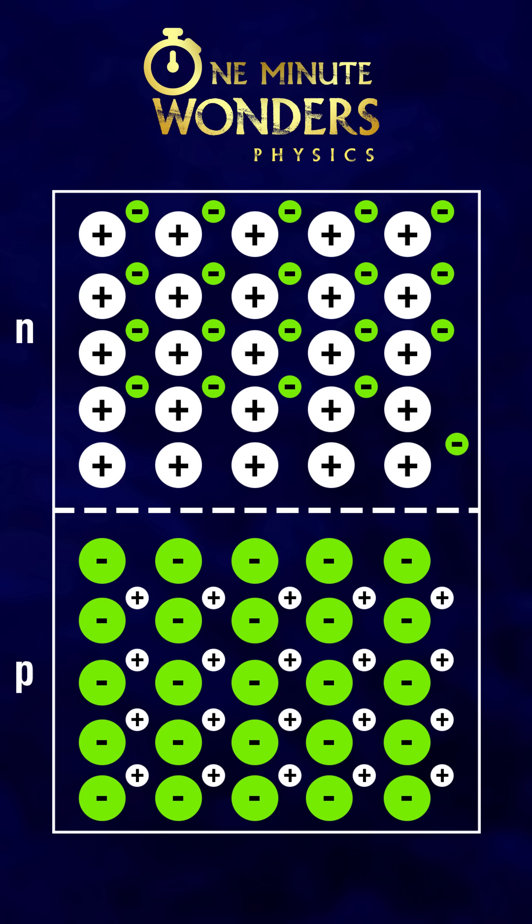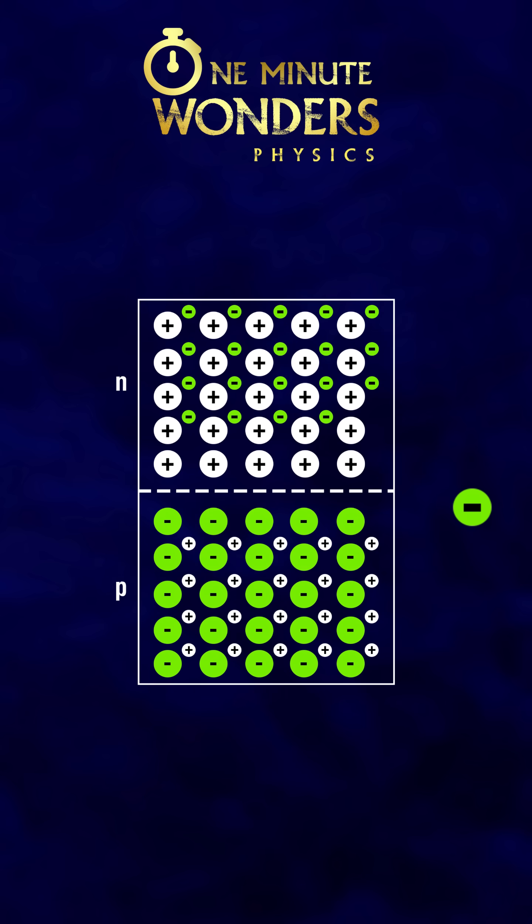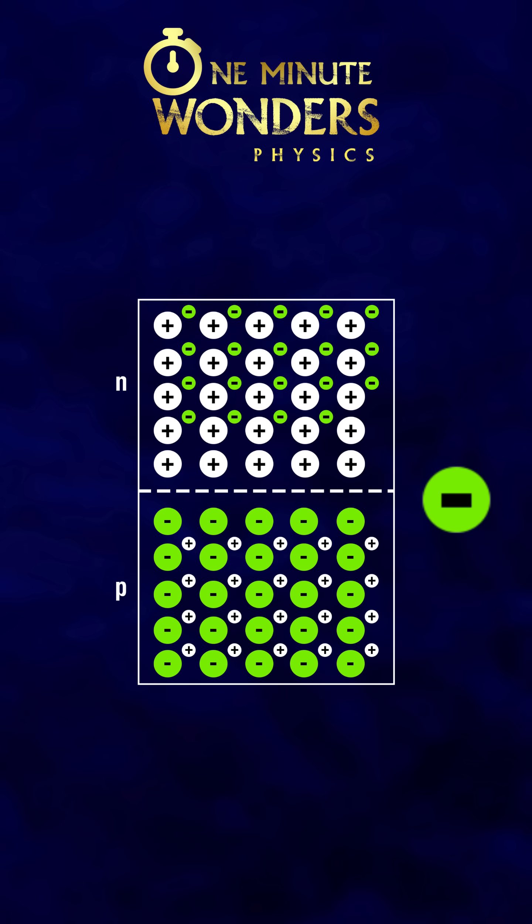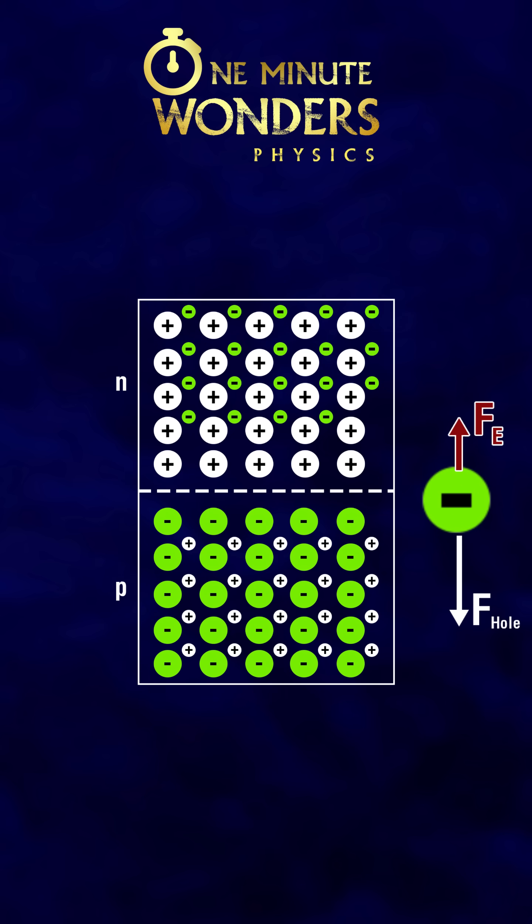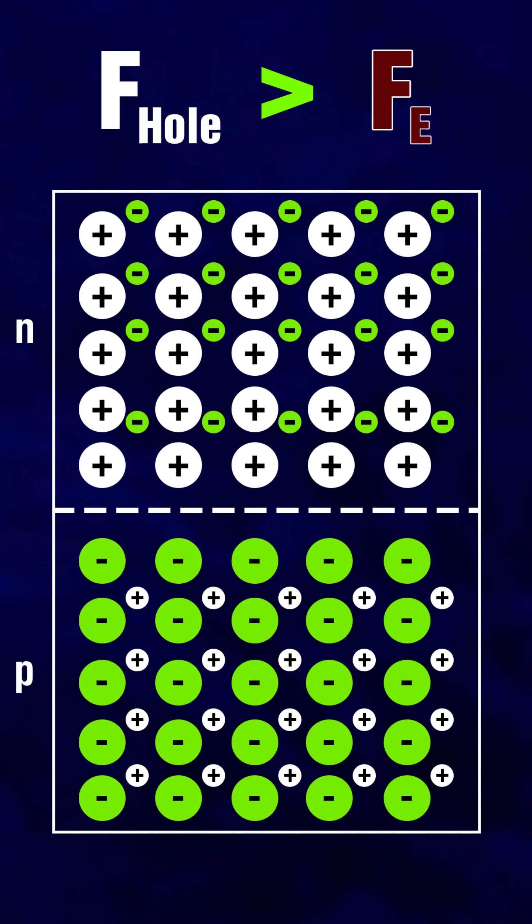When more electrons try to diffuse across the junction, it will experience two forces simultaneously. One is due to the holes of the P region and the other is due to the electric field. If the force due to the holes is greater, more electrons will be diffused across the junction.